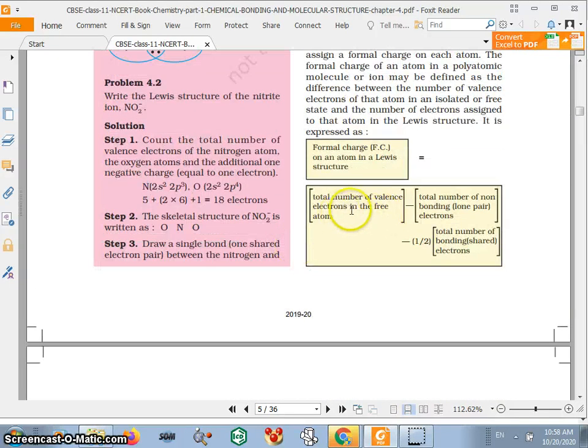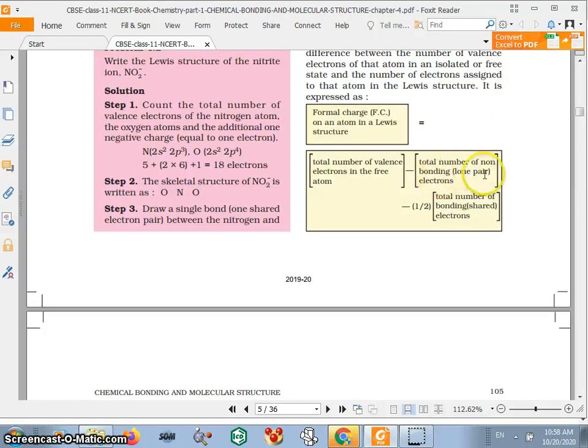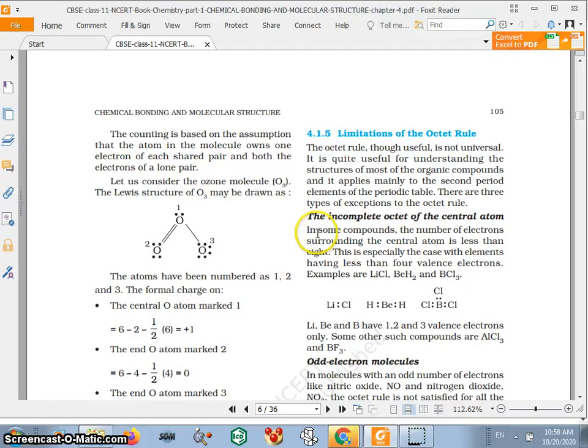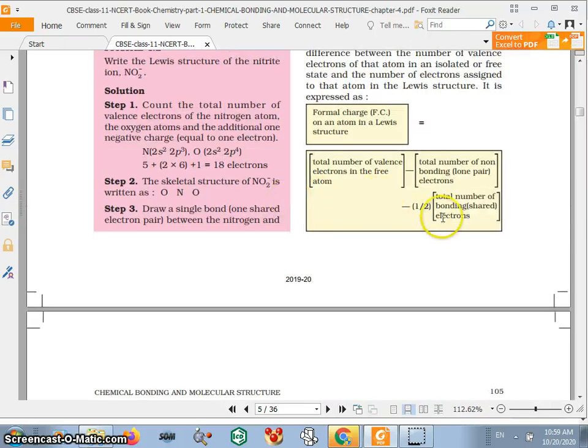You just go to total number of valence electrons in the free atom, so oxygen has total number of six electrons. Then total number of valence electrons in the free atom minus total number of non-bonding lone pair of electrons. Here in case of here one lone pair of electrons, in case of this two lone pairs of electrons, in case of three, three lone pairs of electrons. So one, two, three means six electrons here, two electrons here, four electrons.